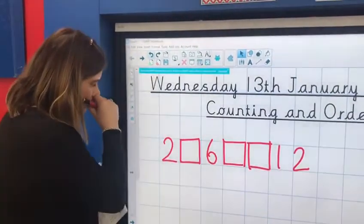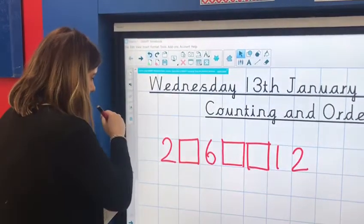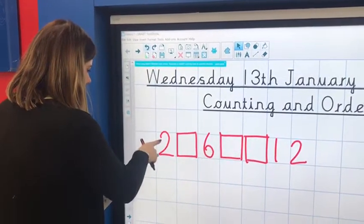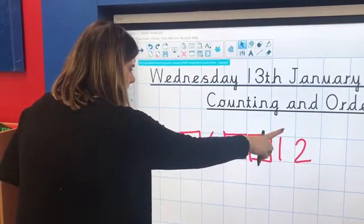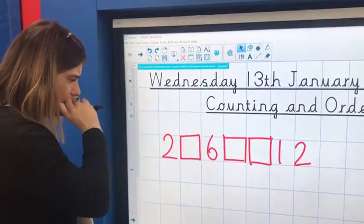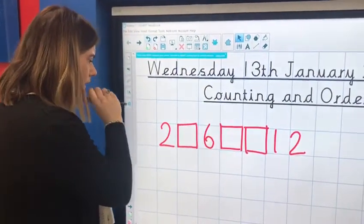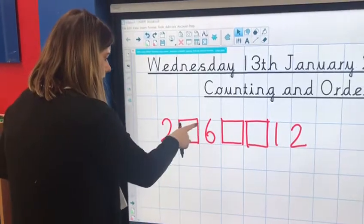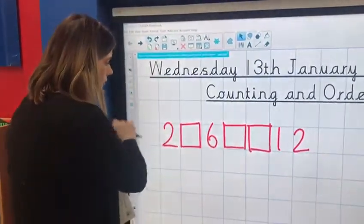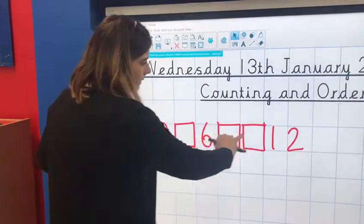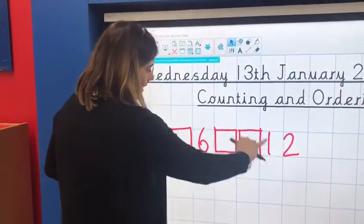Now I know it's not counting in 1s because I'd have 2, 3, 4, 5, 6, 7. So it's not counting in 1s. Let's have a look: 2, 6, 2. It's counting in 2s. So with your grown-up, I want you to fill in the missing numbers, counting in 2s going along with the pattern. So you've got 1, 2.